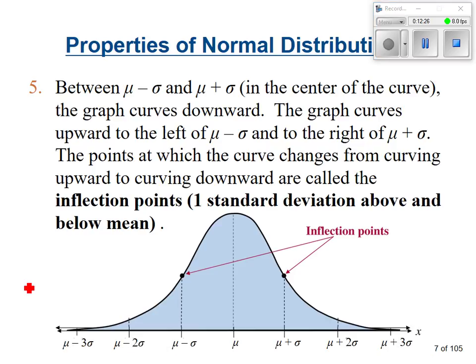So this is your mu - that's your mean. Mu plus sigma... what does sigma stand for? Standard deviation. So mu plus 1 standard deviation, mu plus 2 standard deviations, mu plus 3 standard deviations. Down here: mu minus 1 standard deviation, mu minus 2 standard deviations, mu minus 3 standard deviations. These points where you're 1 standard deviation below and 1 standard deviation above - those points on the curve are called inflection points. That's where the curve changes direction - instead of curving down, it starts to curve up when we get past that point.